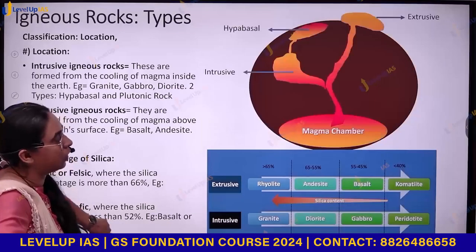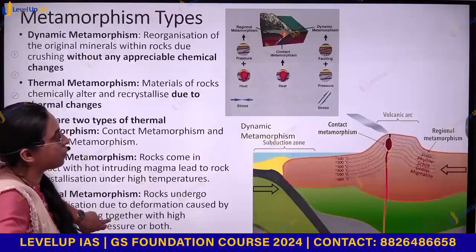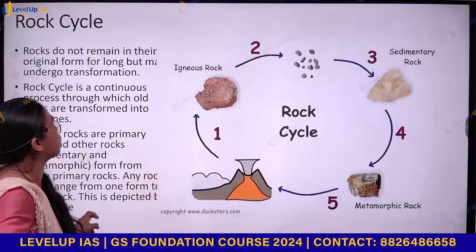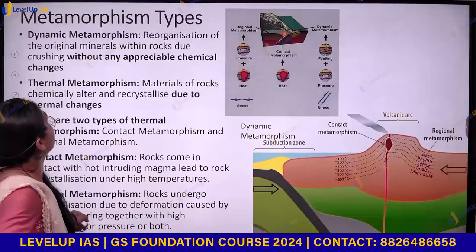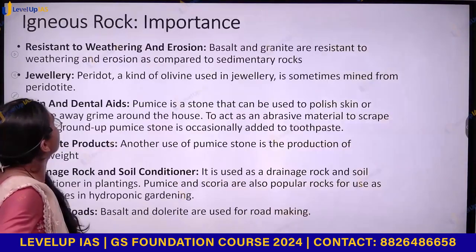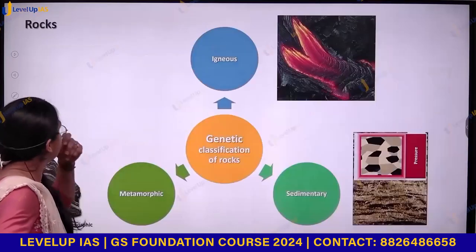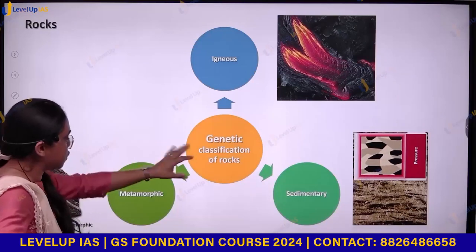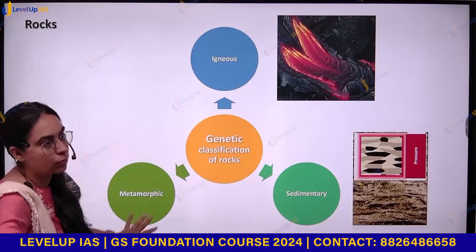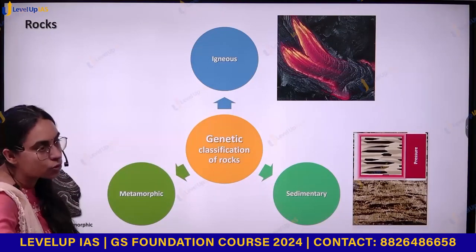On the basis of formation, you can have three types of rock: igneous rocks, sedimentary rocks, and metamorphic rocks.